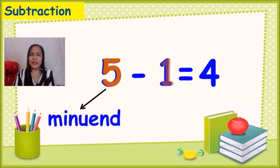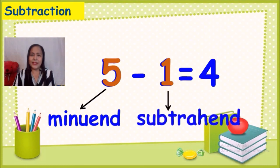The second number, which is one, we call this subtrahend. Everybody say subtrahend. Subtrahend is the number that we take from the other number.